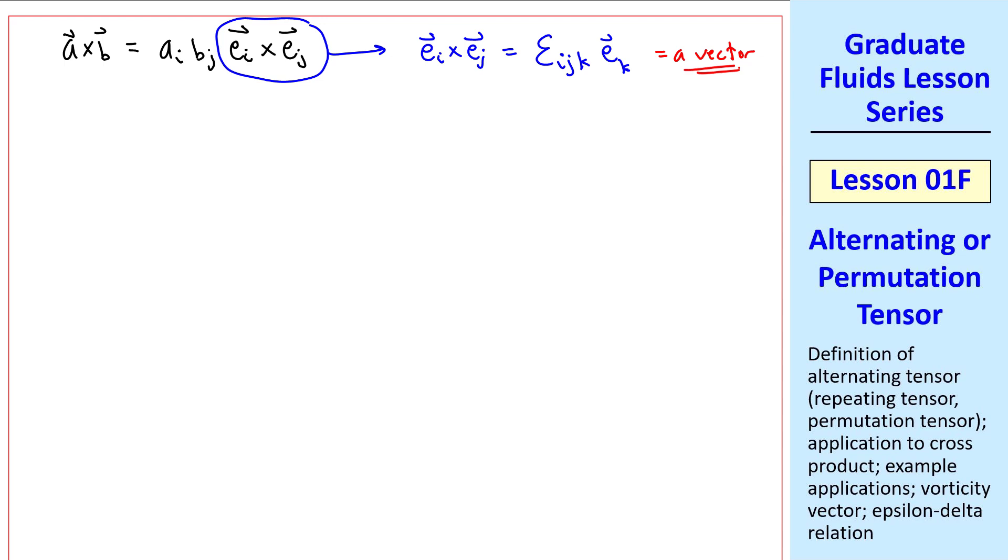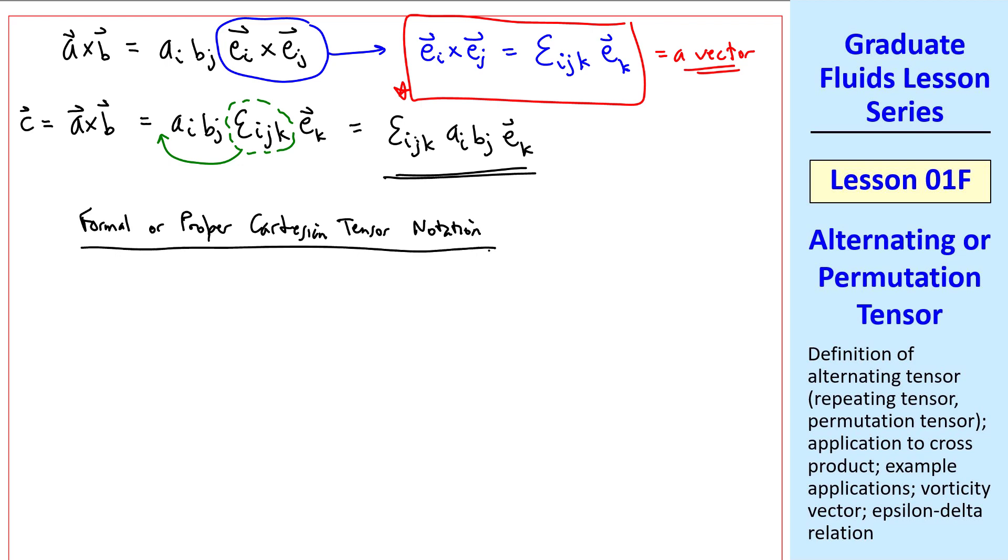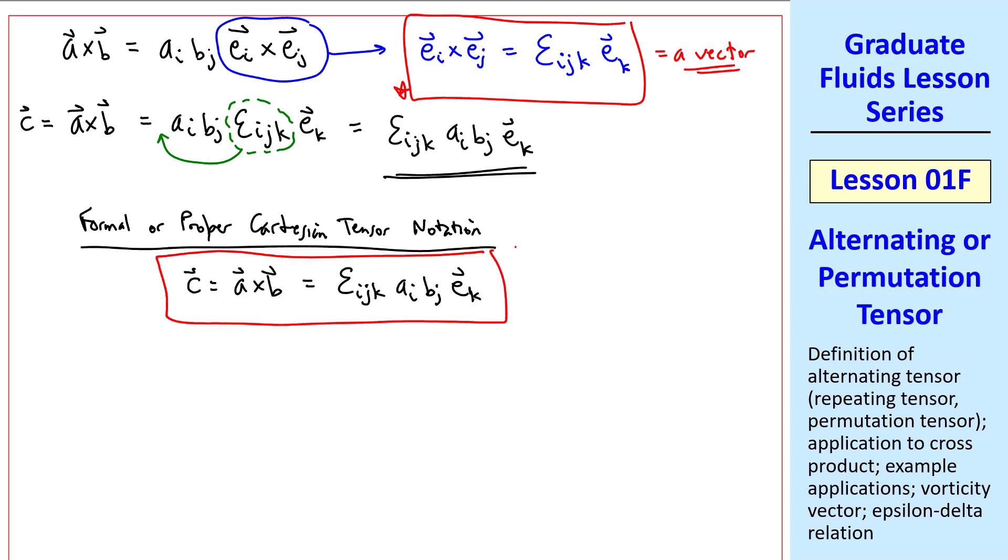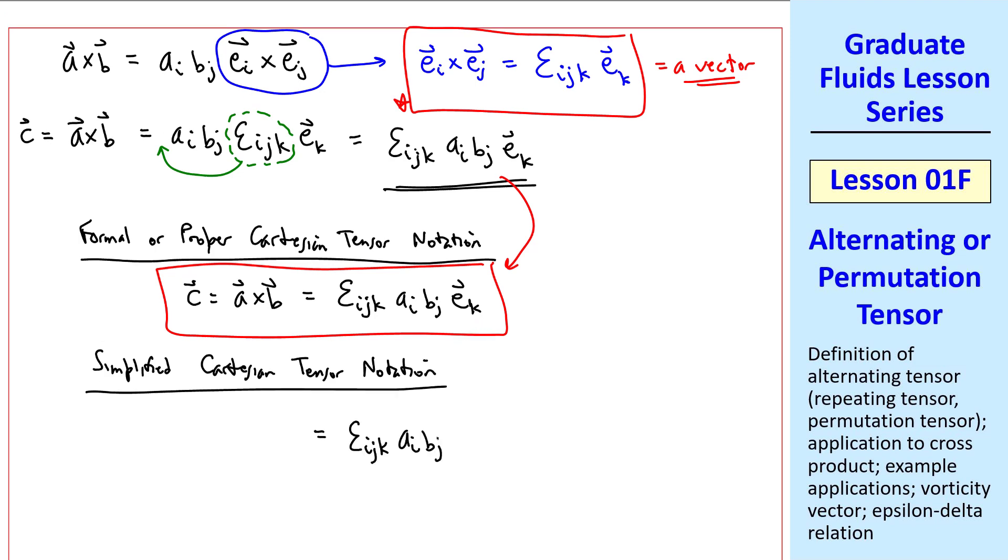Using this equation, we write A cross B equal A_i B_j epsilon_ijk E_k. Since these are all just scalar components, we're allowed to move epsilon over here. Finally, we called A cross B, C. So in formal or proper Cartesian tensor notation, this is our final expression. In simplified Cartesian tensor notation, we drop the unit vector E_k. Since k is our free index, C must also have a k index on the left side. This is our cross product in tensor notation. Note that it's balanced because k is a free index on both sides, and i and j get summed because they're dummy or repeated indices.